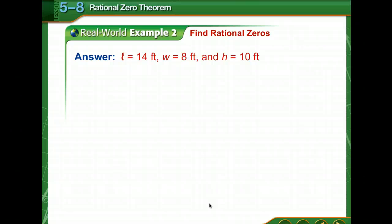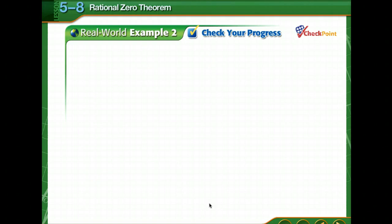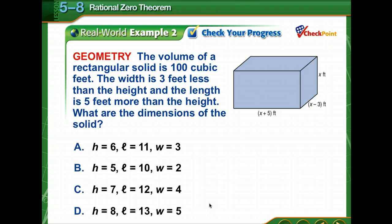Now you usually do not need to test all of the possible zeros. Once you find a zero, you can try to factor the depressed polynomial to find any other zeros. I'll let you check your progress and then come back and check your answer.